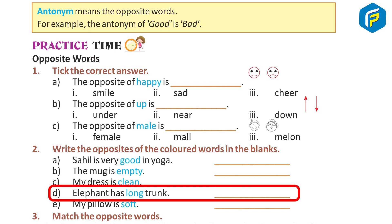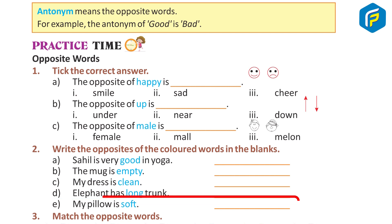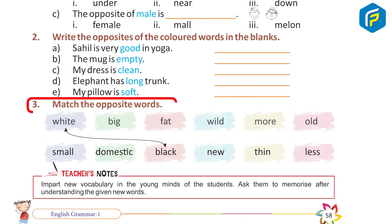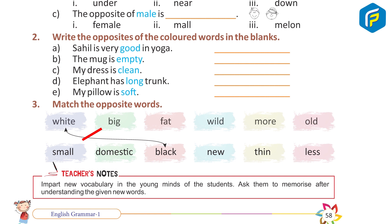Short. E — my pillow is soft. Answer: hard. Three: match the opposite word. Match white with black, big with small, fat with thin.